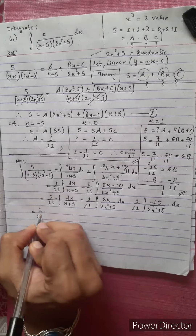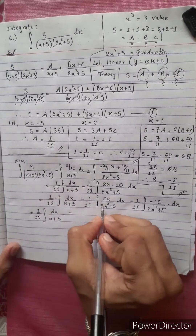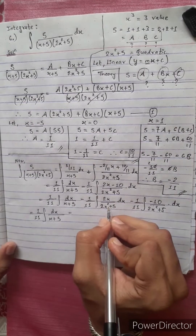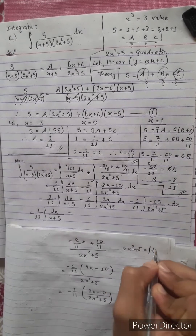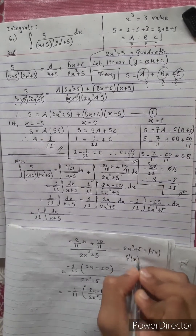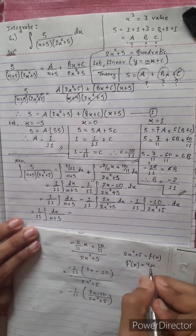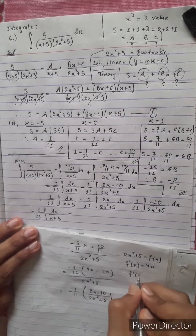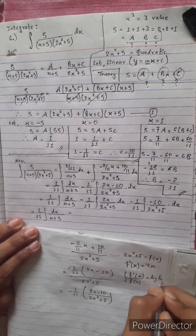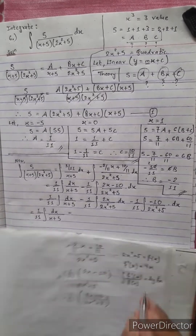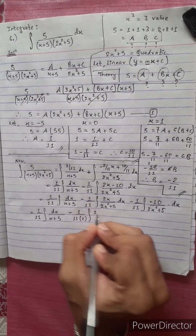For the remaining term: 1 by 11 integration of dx divided by (2x squared plus 5). We write 2x squared plus 5 using completing the square formula. F dash x divided by f(x) gives integration equal to log f(x). We apply this formula to solve.